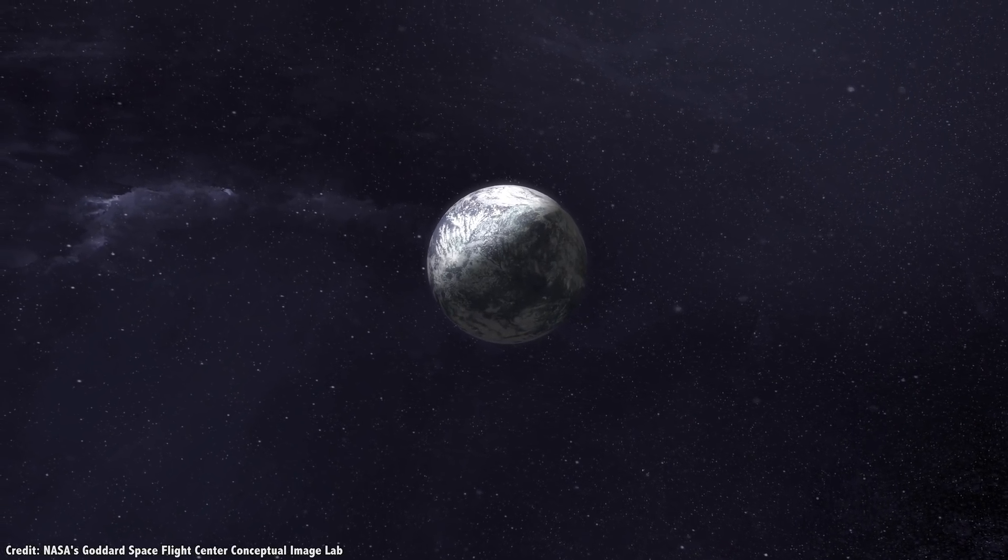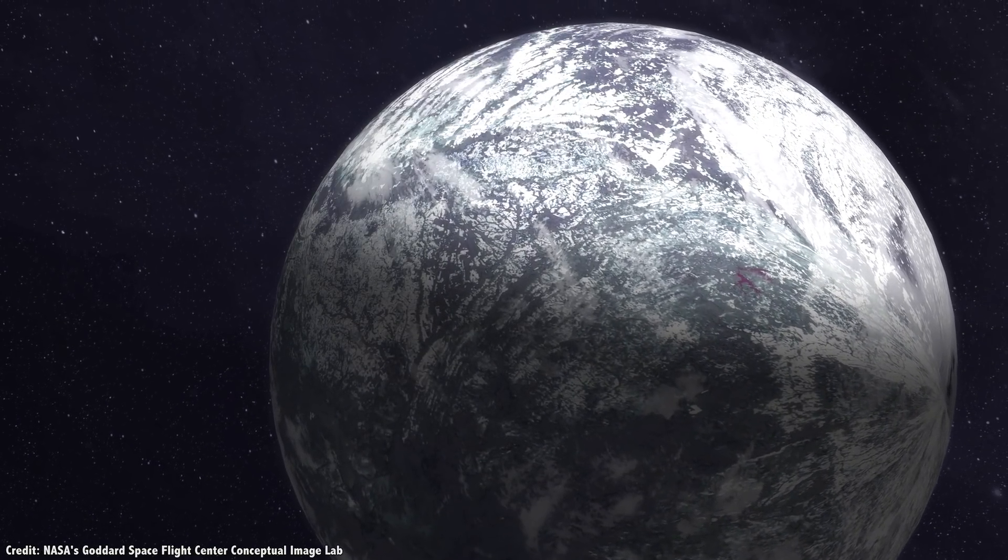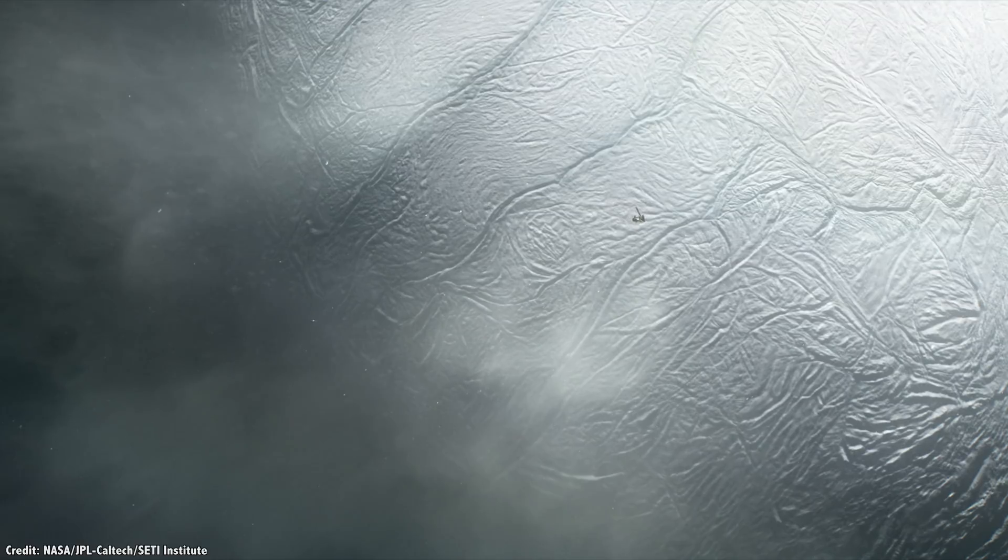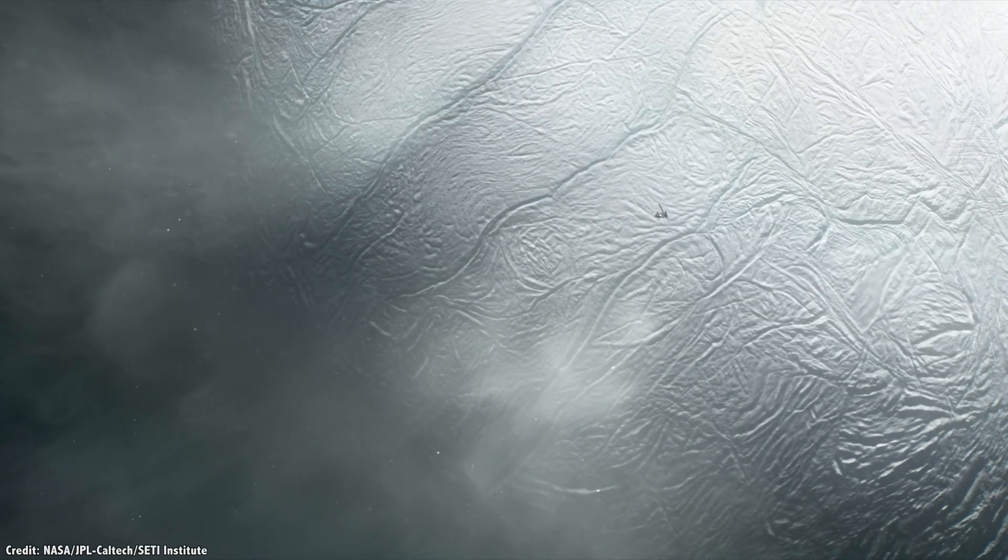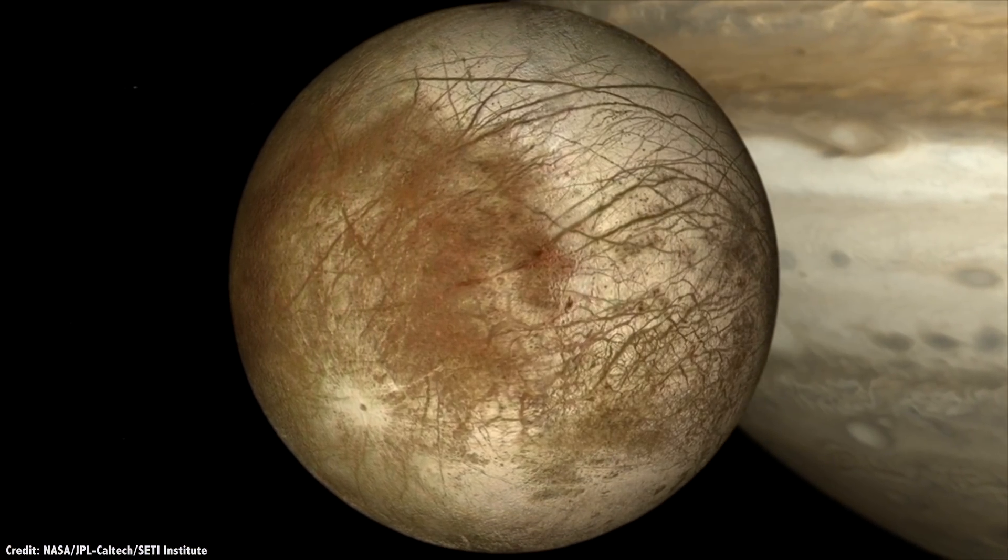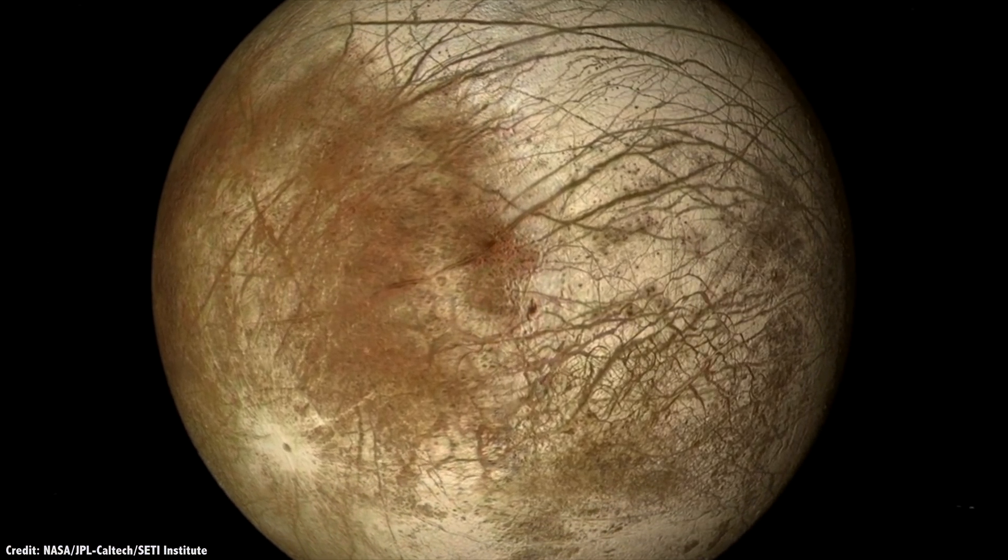We've done a whole video about the prospects of life on icy worlds, and how there could be thousands of times more worlds like this than terrestrial worlds in the habitable zones of stars in the Milky Way. I'll link to that here and in the show notes if you haven't seen it already. Let's talk about the practical plan to actually get under the ice on Europa.